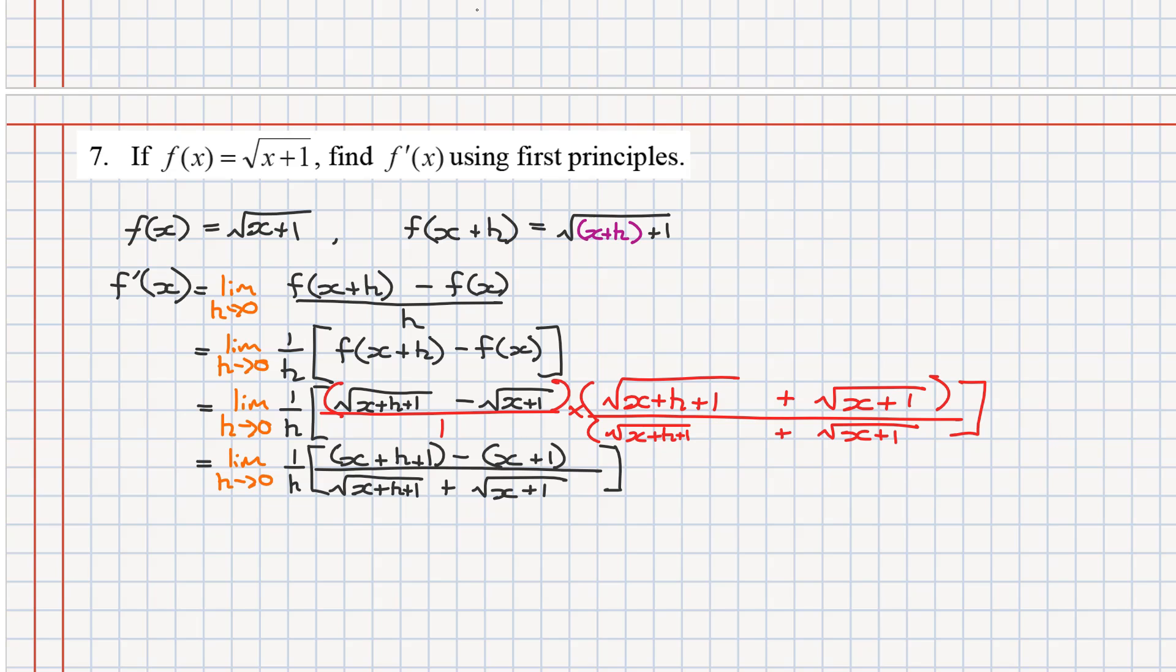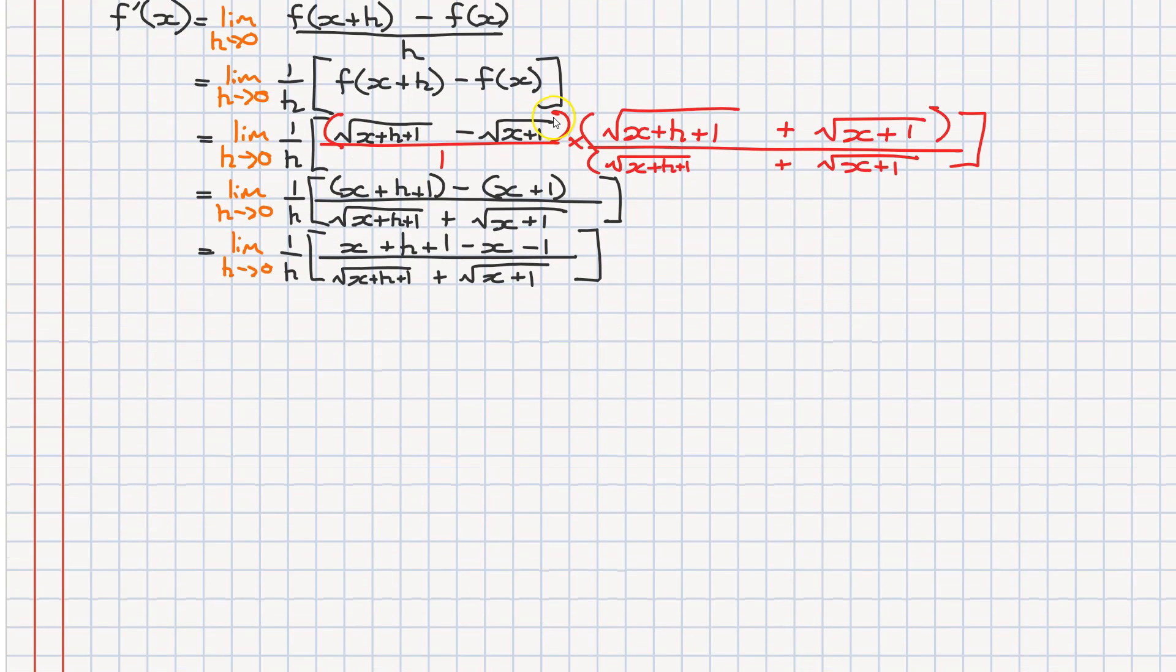The next step is we're going to deal with the numerator. We're going to break open these brackets and collect like terms. Looking at the terms on the top, if we collect like terms, our x is going to cancel out with our take x, and our plus one is going to cancel with our minus one. Effectively, all we're left with is our plus h here, which is really convenient.